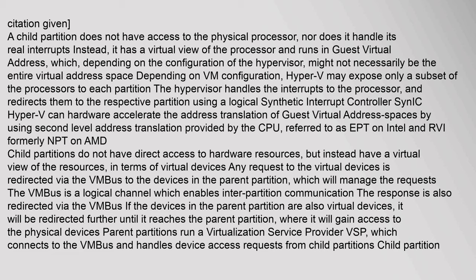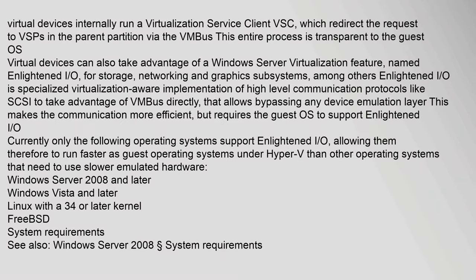Child partitions have a virtual view of resources in terms of virtual devices. Any request to the virtual devices is redirected via the VM bus to the devices in the parent partition, which manages the requests. The VM bus is a logical channel enabling inter-partition communication. If the devices in the parent partition are also virtual devices, the request is redirected further until it reaches the parent partition and gains access to the physical device. Parent partitions run a Virtualization Service Provider (VSP) which connects to the VM bus and handles device access requests from child partitions. Child partition virtual devices run a Virtualization Service Client (VSC) which redirects requests to VSPs via the VM bus. This entire process is transparent to the guest OS.